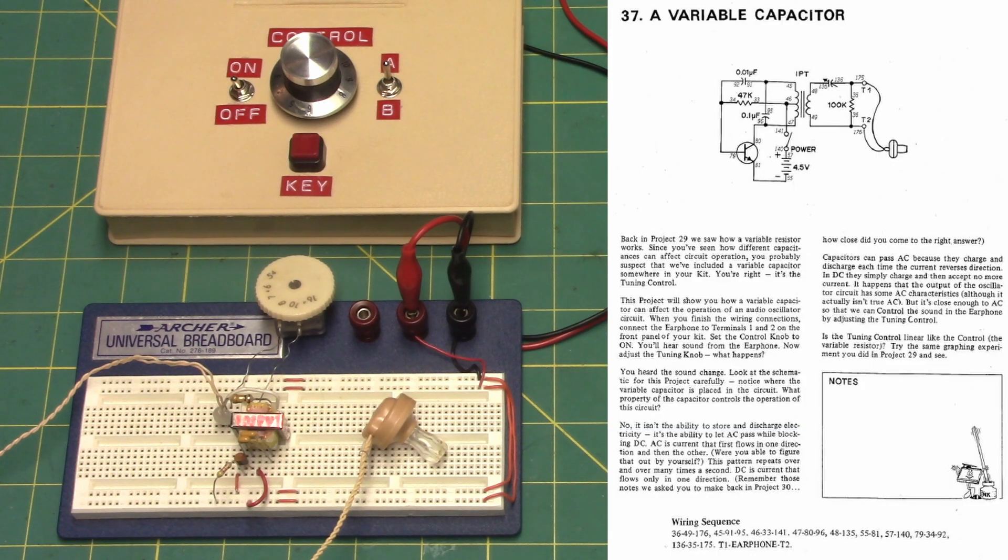Back in project 29, we saw how a variable resistor works. Since you've seen how different capacitances can affect circuit operation, you probably suspect that we've included a variable capacitor somewhere in your kit. You're right, and it's the tuning control.